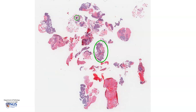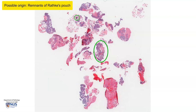These tumors arise in the suprasellar or the sellar region. They are thought to arise from Rathke's pouch, which is an evagination of the roof of the developing mouth. Therefore, the epithelium that forms these tumors resembles developing mouth structures such as the developing tooth.